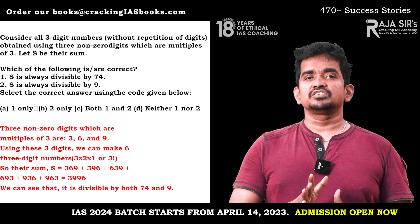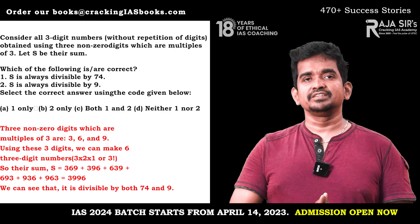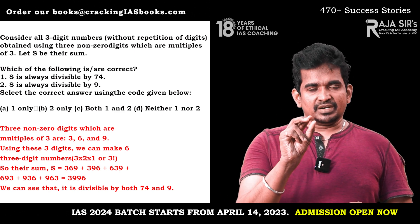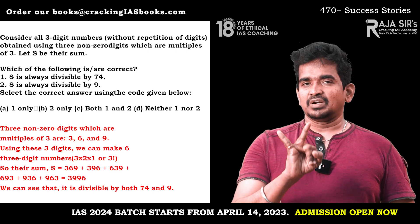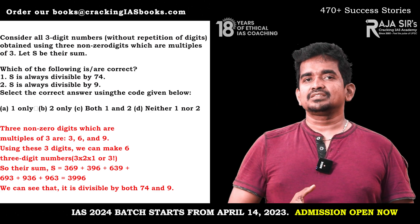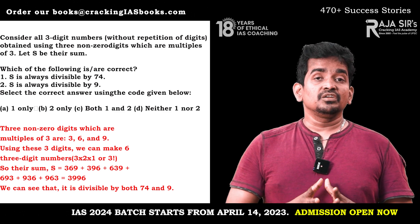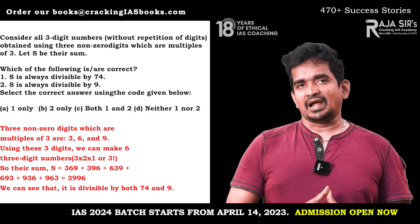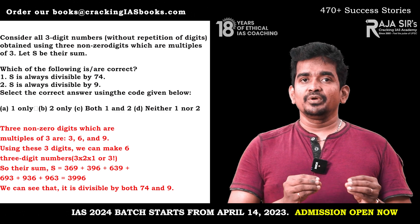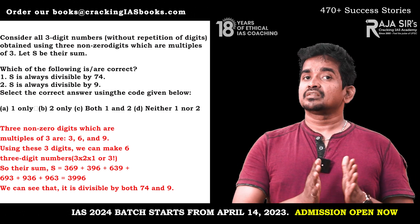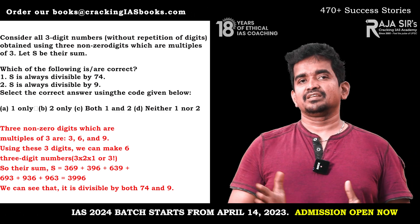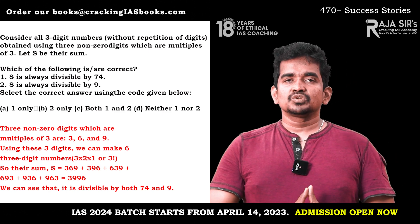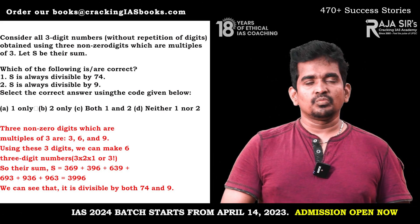You can easily check that 3996 is divisible by both 74 and 9. The key is identifying the pattern: without repetition and multiples of three. Also, during the exam with psychological stress you may miscalculate, so do it simply — first count all the hundreds, then all the tens, then the units. You can observe that both statements one and two are true.